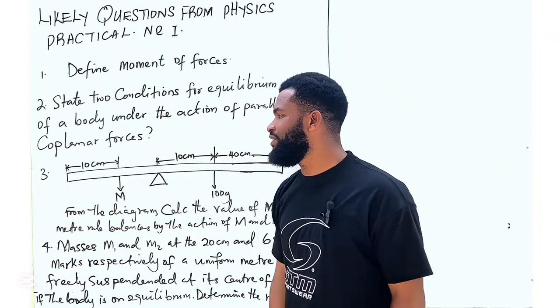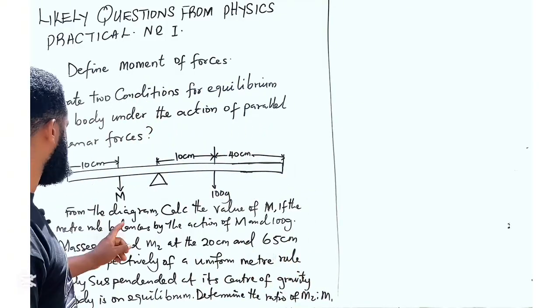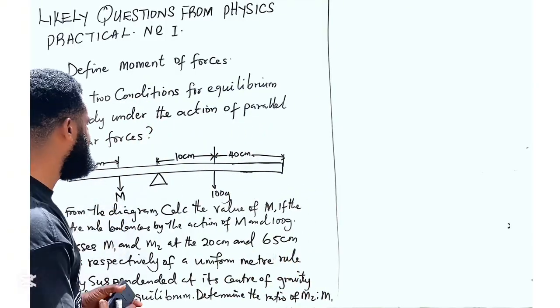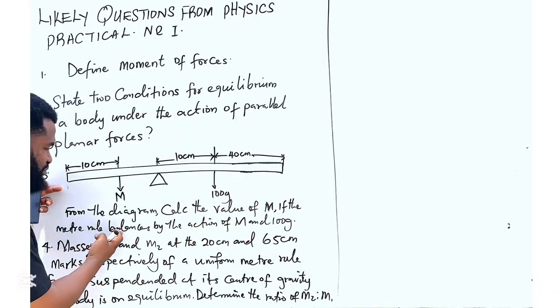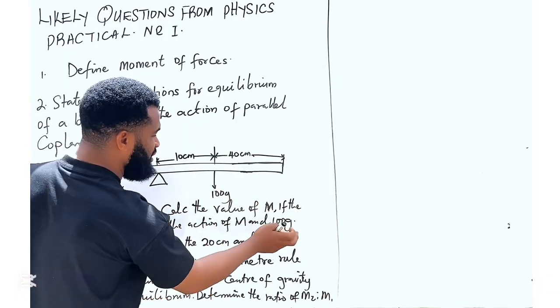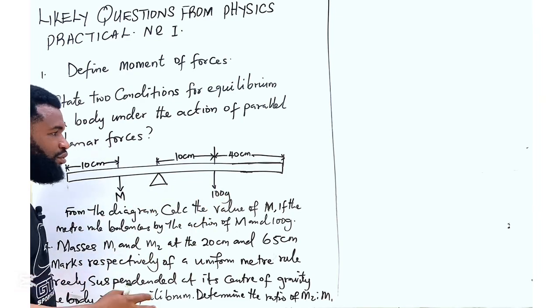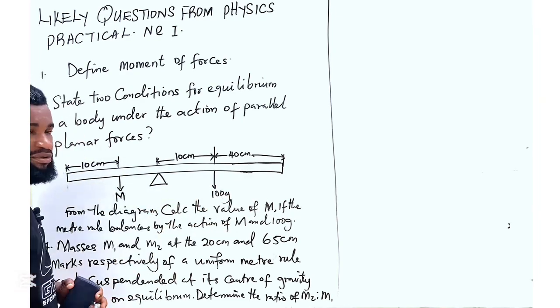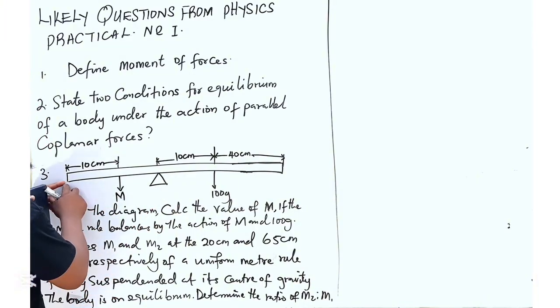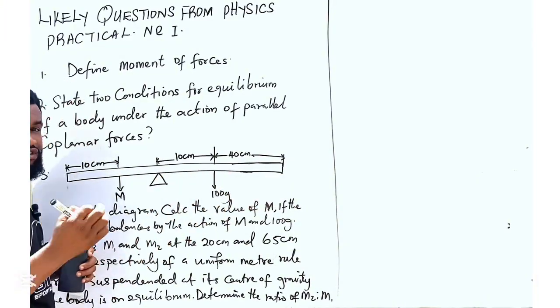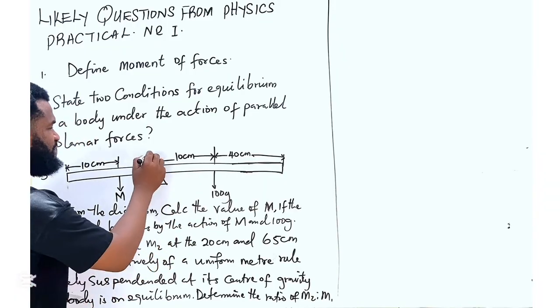Number three, let us solve this. From this diagram calculate the value of m. This is the value of m we are looking for. Now this is a meter rule. If the meter rule balances by the action of m and 100 grams, this 100 gram and this mass, which I do not know, has balanced this body in equilibrium. So let's find that force that will balance this. Now from this to this place is 100 cm. And that means from here, this must be 50 cm.